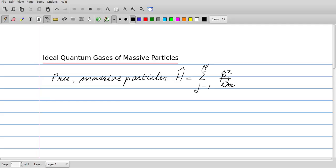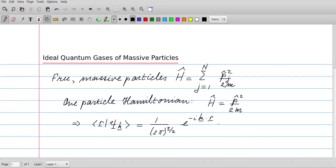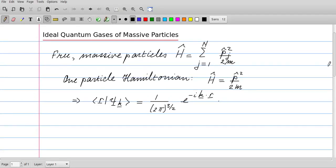We have a Hamiltonian which is simply p squared j over 2m. Because we are working in the framework of statistical mechanics in the grand canonical ensemble, we should look at the states available to these particles, and that is described by the solutions of the one particle Hamiltonian. Here are these solutions - they are plane waves characterized by a wave vector k.